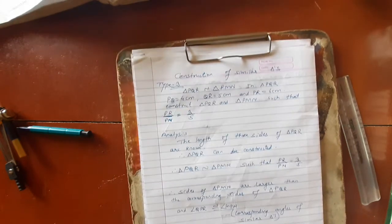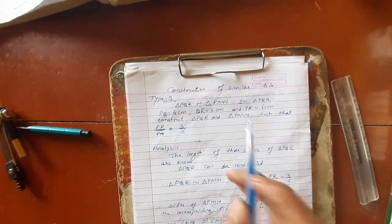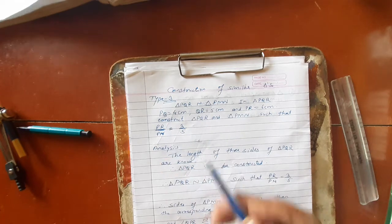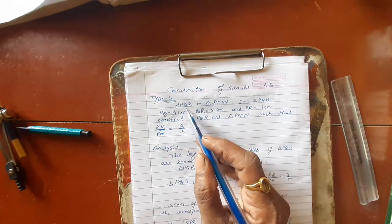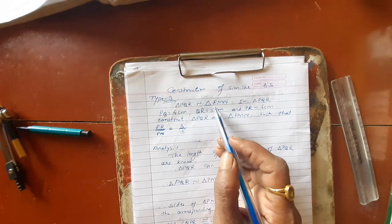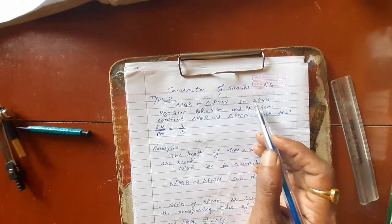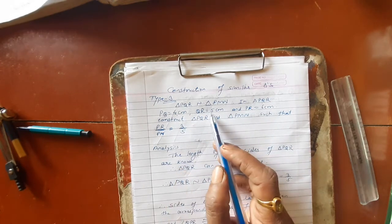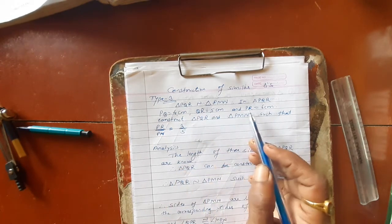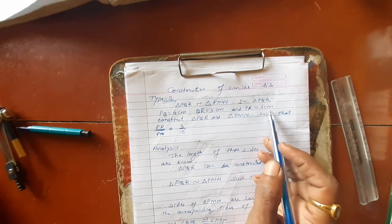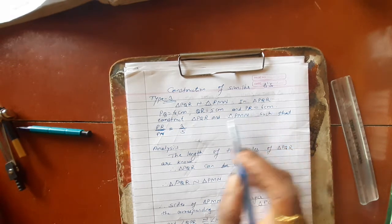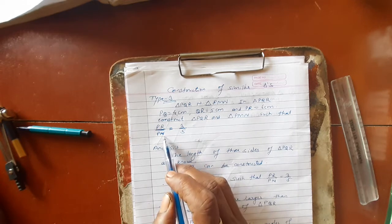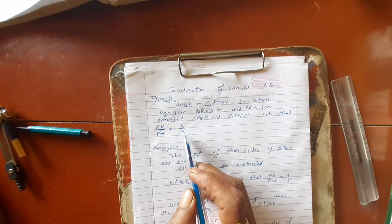Okay students, today we will see construction of similar triangles type 3. What is given here? Triangle PQR and similar triangle PMN. In triangle PQR, PQ is equal to 4 centimeters, QR is equal to 5 centimeters, PR is equal to 6 centimeters. Construct triangle PQR and PMN such that PR upon PN is 3 upon 5.